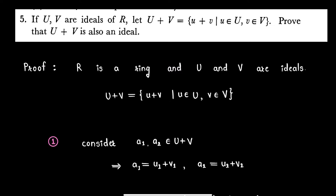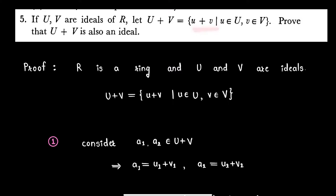Hello friends, welcome back to Rising Mathematics. In this video I am going to solve an exercise question from the book Topics in Algebra, from Chapter 3, Ring Theory. The question is: if U and V are ideals of ring R, let U plus V be the set of all elements of the type u plus v, where u is an element from U and v is an element from V. Prove that the set U plus V is an ideal of ring R.